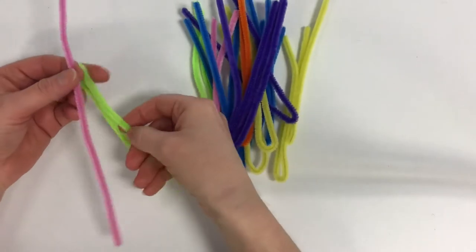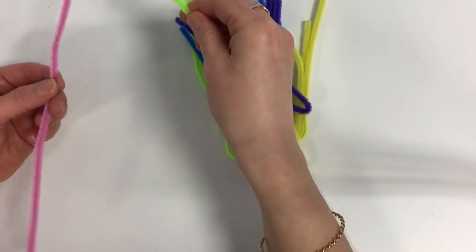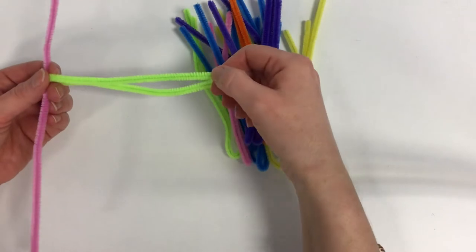Hold your first pipe cleaner vertically and then get your first folded reed and slip it onto the vertical one.